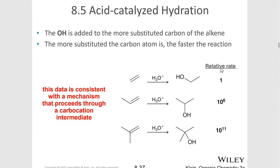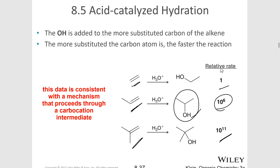The OH is added to the more substituted carbon of the alkene, and the more substituted that carbon is — because of the mechanism — the faster the reaction. If we add water to just ethene with a relative rate of one, then an alkene with one substituent would react at ten to the sixth, or a million times as fast. This is the reaction from propene and is actually used to make isopropyl alcohol. Adding another substituent gives ten to the eleventh speed relative to ethene, and that produces t-butyl alcohol.